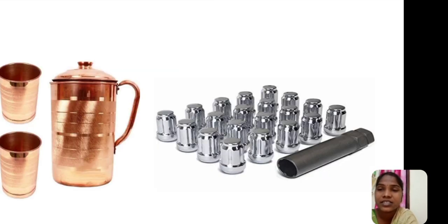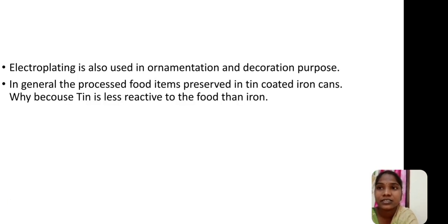Some examples are there for electroplating method. Then, we also use it in ornamentation and decoration purposes. In general, the processed food items are preserved in tin coated iron cans. Why? Because tin is less reactive with food items than iron metals.